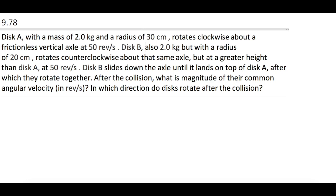Disc A, with a mass of 2 kilograms and a radius of 30 centimeters, rotates clockwise on a frictionless vertical axle at 50 revolutions per second. Disc B, also 2 kilograms but with a radius of 20 centimeters, rotates counterclockwise about the same axle but at a greater height than disc A at 50 revolutions per second. Disc B slides down the axle until it lands on top of disc A, after which they rotate together. After the collision, what is the magnitude of their common angular velocity in revolutions per second, and in which direction do the discs rotate after the collision?